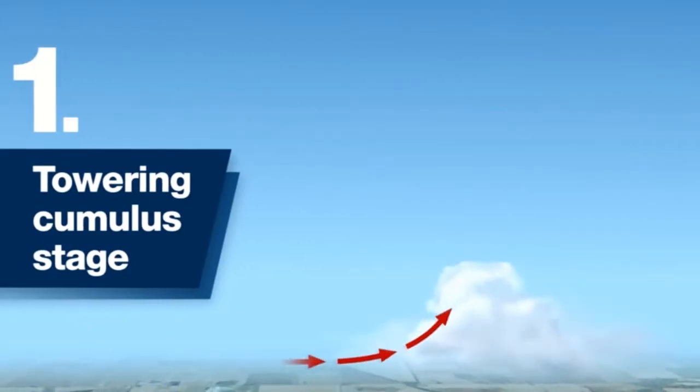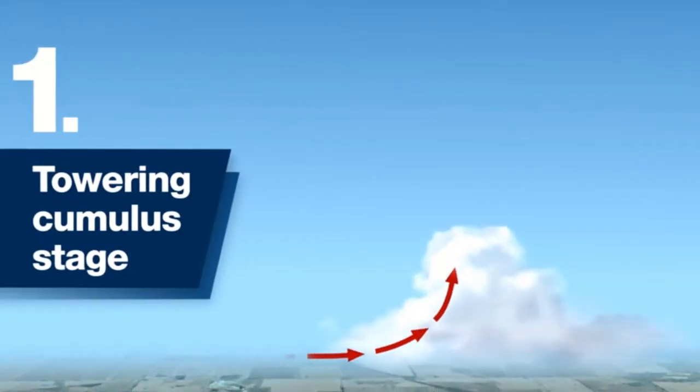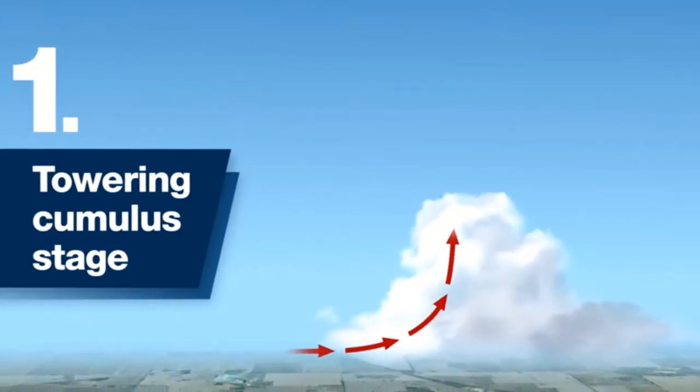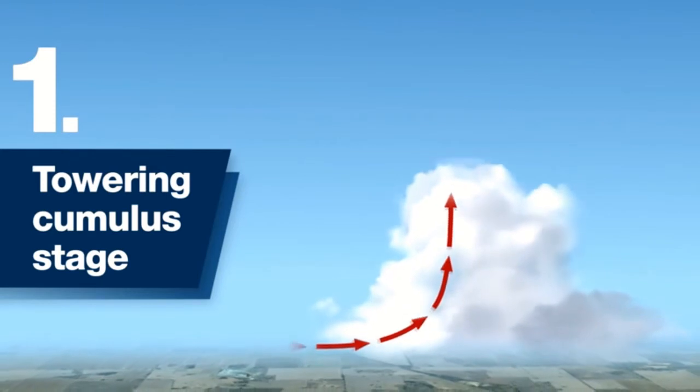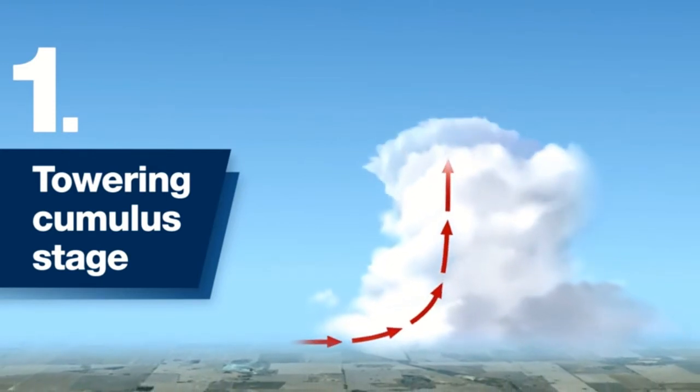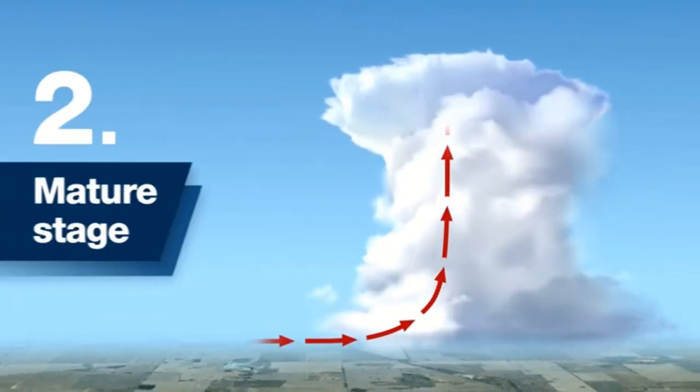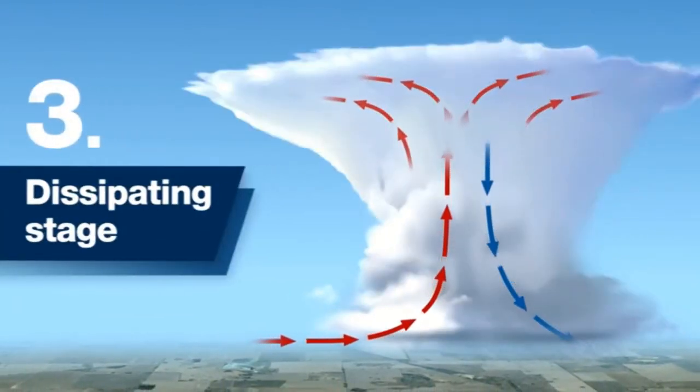A thunderstorm cell during its life cycle progresses through three stages: the cumulus, the mature, and the dissipating.